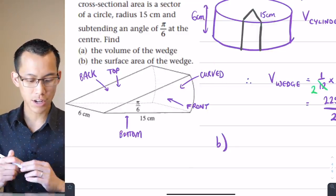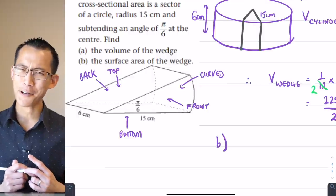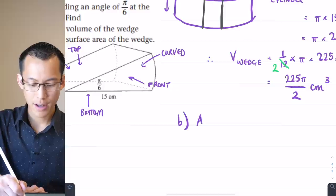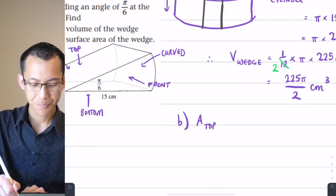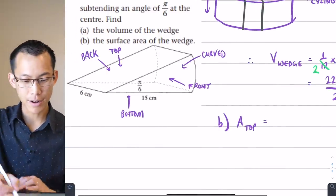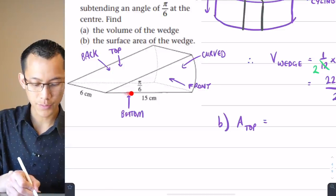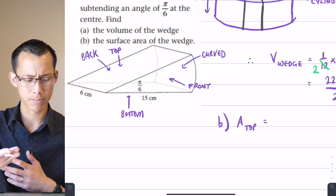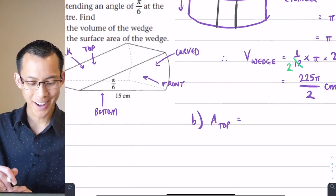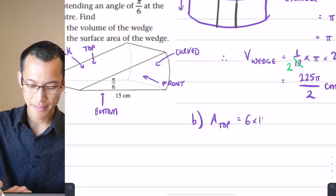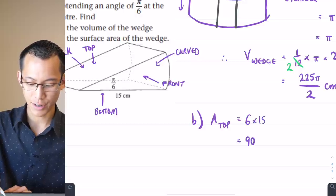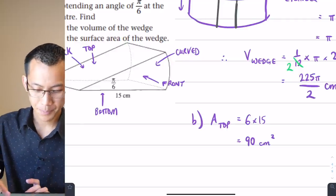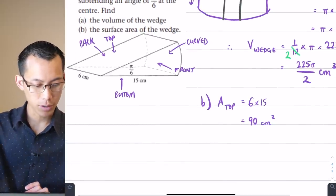So let's just start going through. I'll do them in order of ease. So the top and the bottom are both rectangles. So I'm going to go area of top is going to be the same as the area of the bottom, which as you can see here is 15. That's the width and multiply by six. That's the depth or the length. So six times 15, that's going to give me 90 square centimeters. So I will file that away for later. Once I've got the top, I've got the bottom.